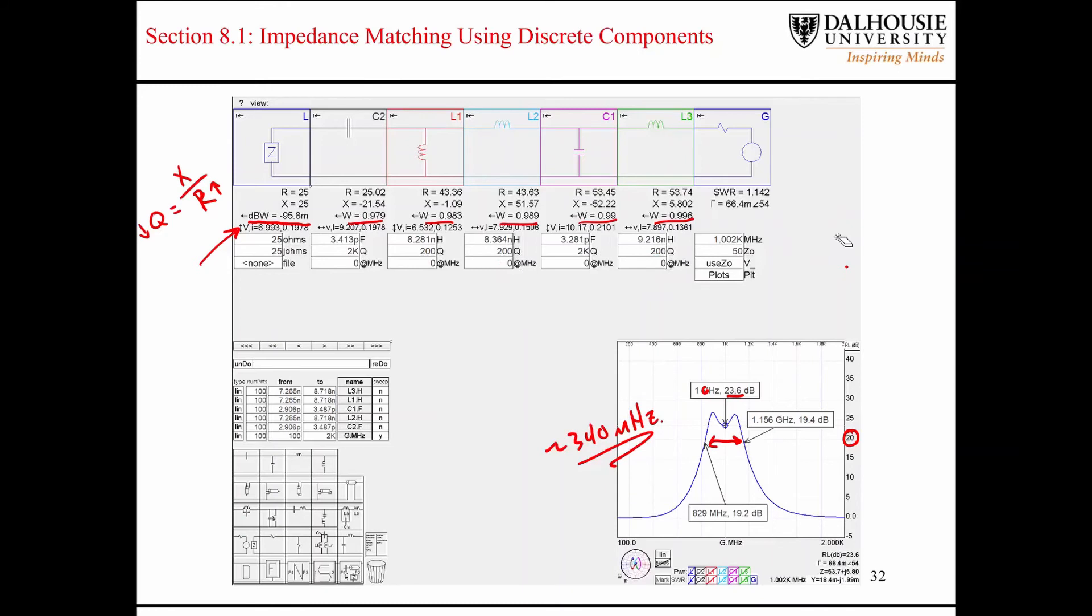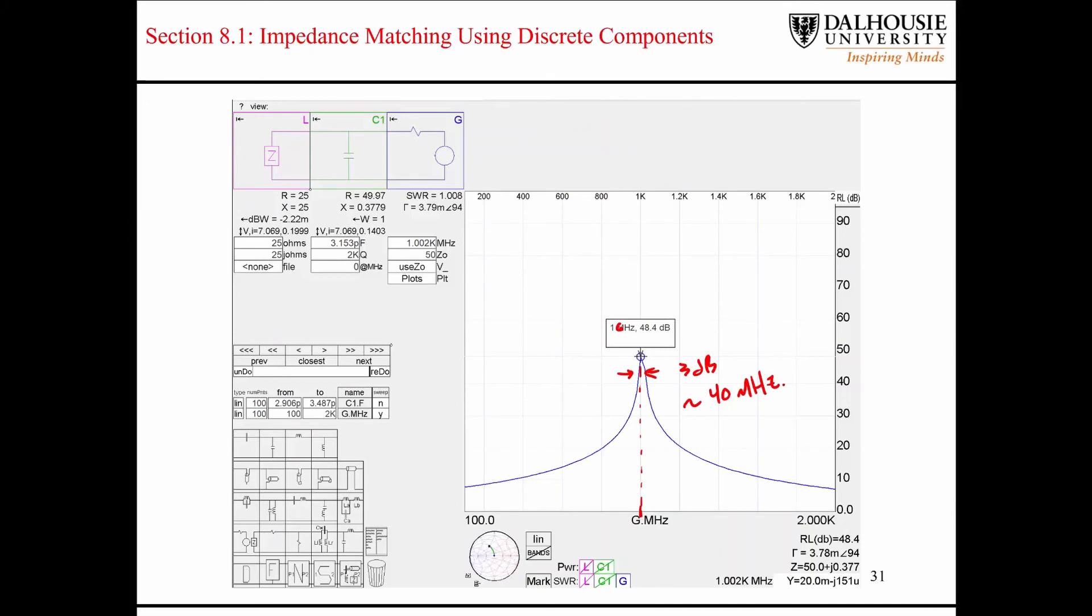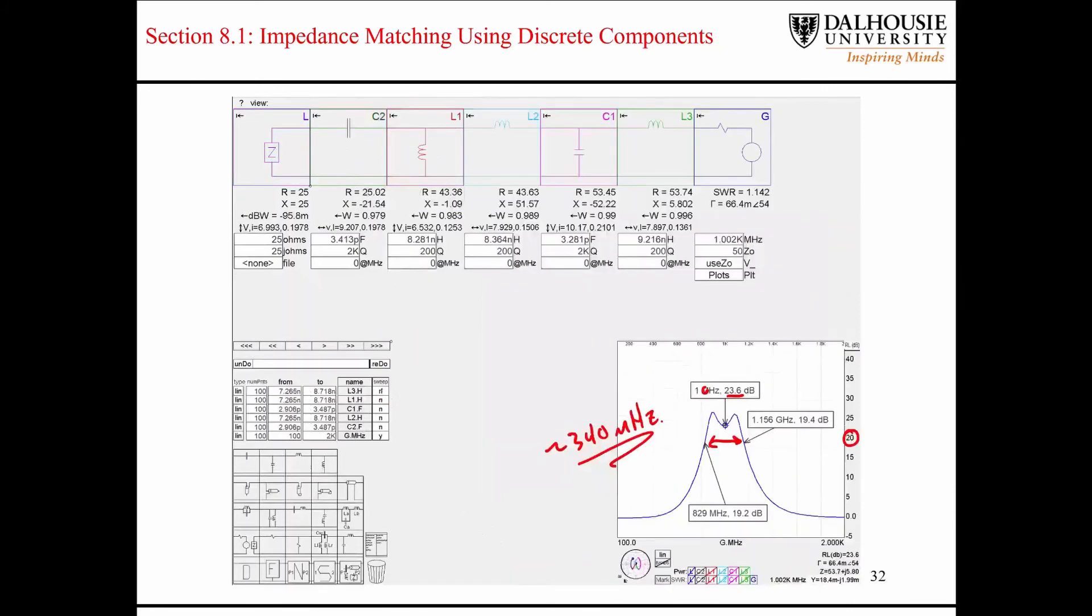That's one of the disadvantages of going with these matching networks that are based on multi-components like this. Unfortunately, SimSmith doesn't allow us... It allows us to vary the value of the capacitor in this example here by doing a sweep, by turning the sweep on. We could do the same thing here. We could set different ranges for inductors and capacitors and turn these sweeps on. But, unfortunately, the view that results from this in SimSmith isn't quite the one that I was looking for.